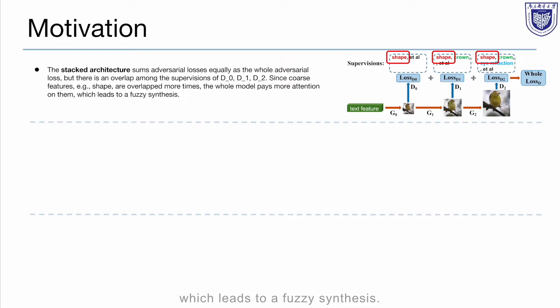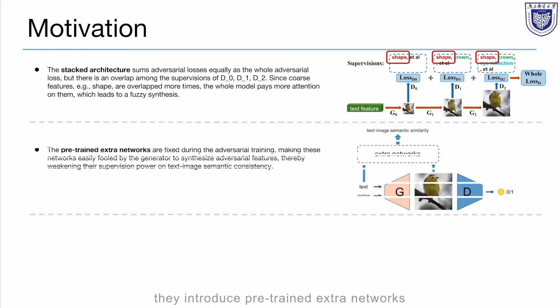Second, they introduce pre-trained extra networks to enhance text-image semantic consistency. But the extra networks are fixed during the adversarial training, making these networks easily fooled by the generator to synthesize adversarial features, thereby weakening their supervision power.